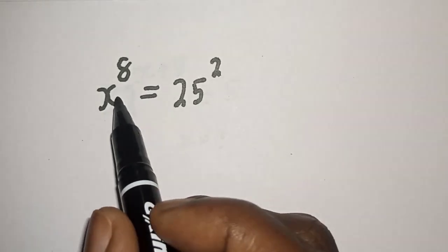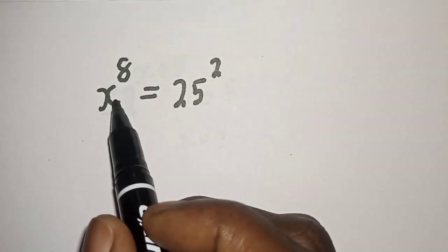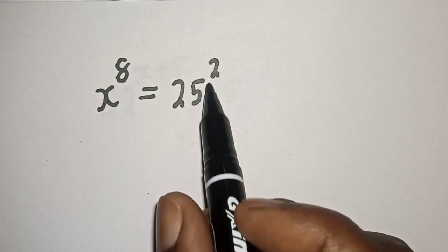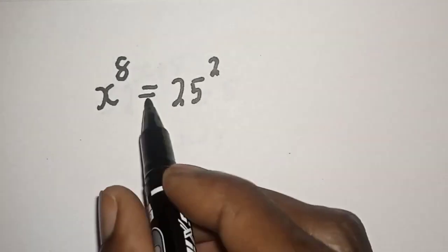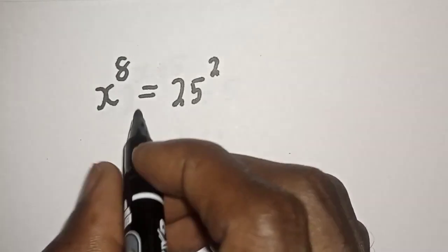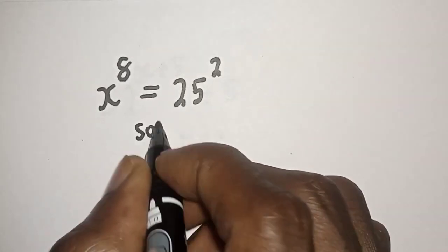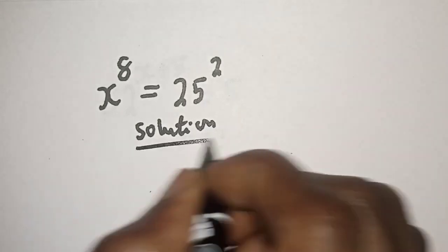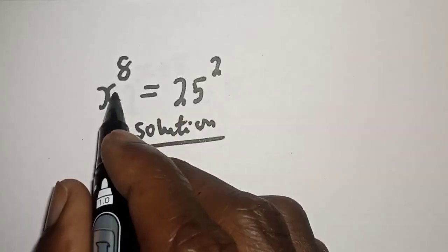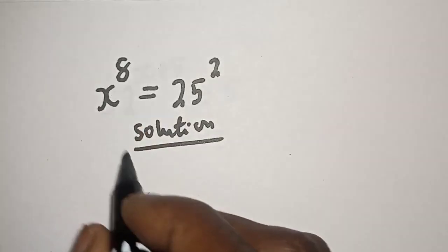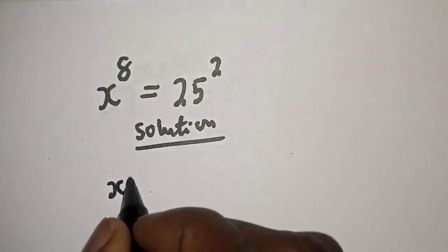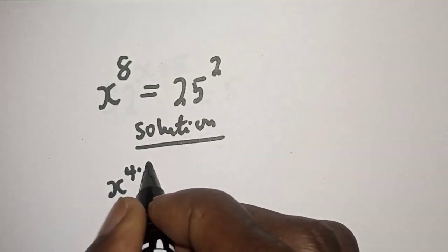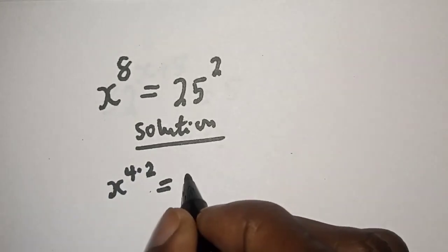Hi everyone. How to solve s raised to the power 8 is equal to 25 squared. Like, share, comment, and subscribe. Solution: s raised to power 8 can be written as s raised to power 4 multiplied by 2, is equal to 25 squared.